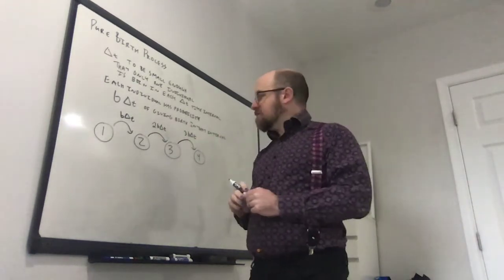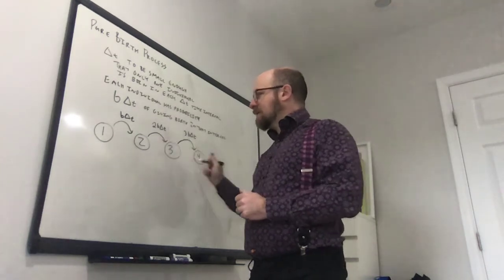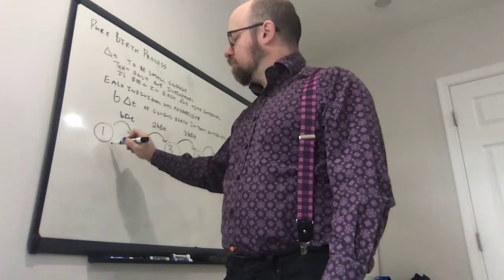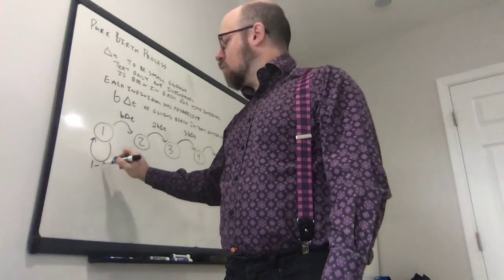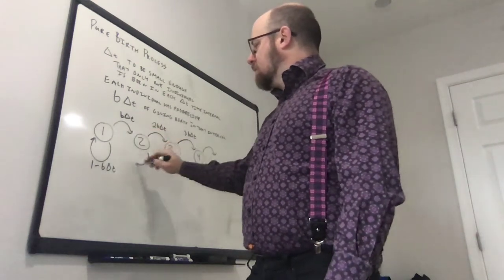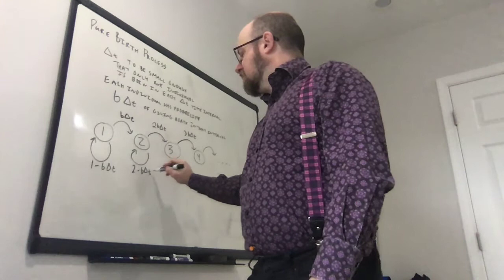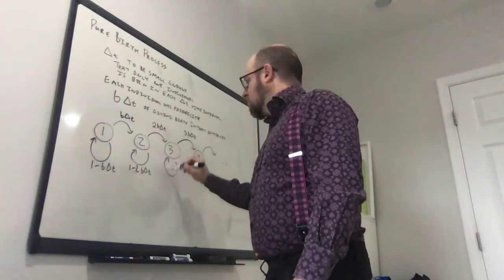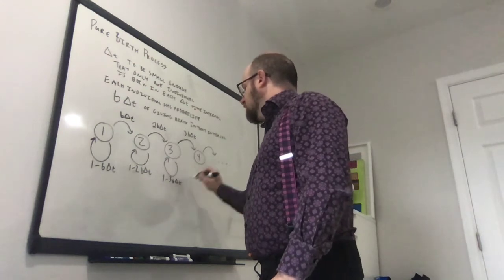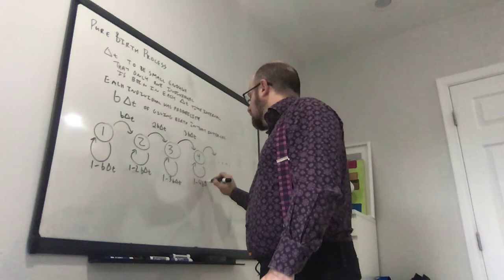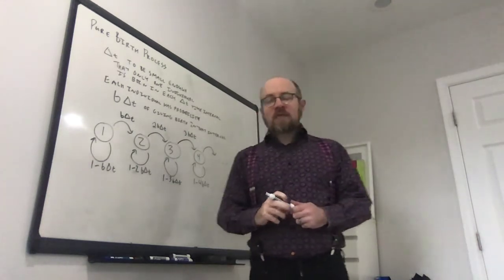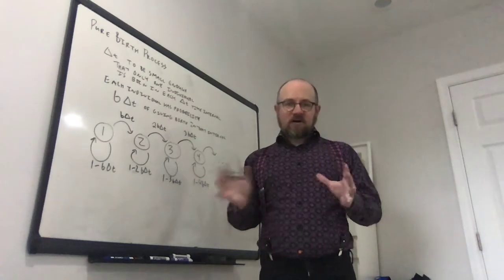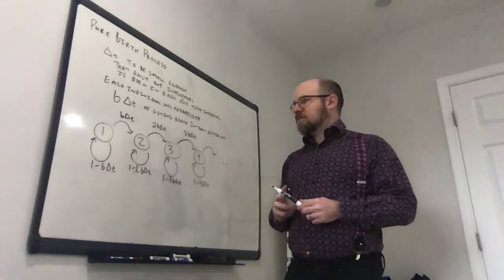We also have the rest of the Markov chain — the staying probabilities. There's a (1 − b·Δt) probability of staying in state one, a (1 − 2b·Δt) probability of staying in state two, (1 − 3b·Δt) for state three, (1 − 4b·Δt) for state four, and so on. So this is the full model for a population that gives birth — similar to the queue model in structure but with state-dependent transition rates.